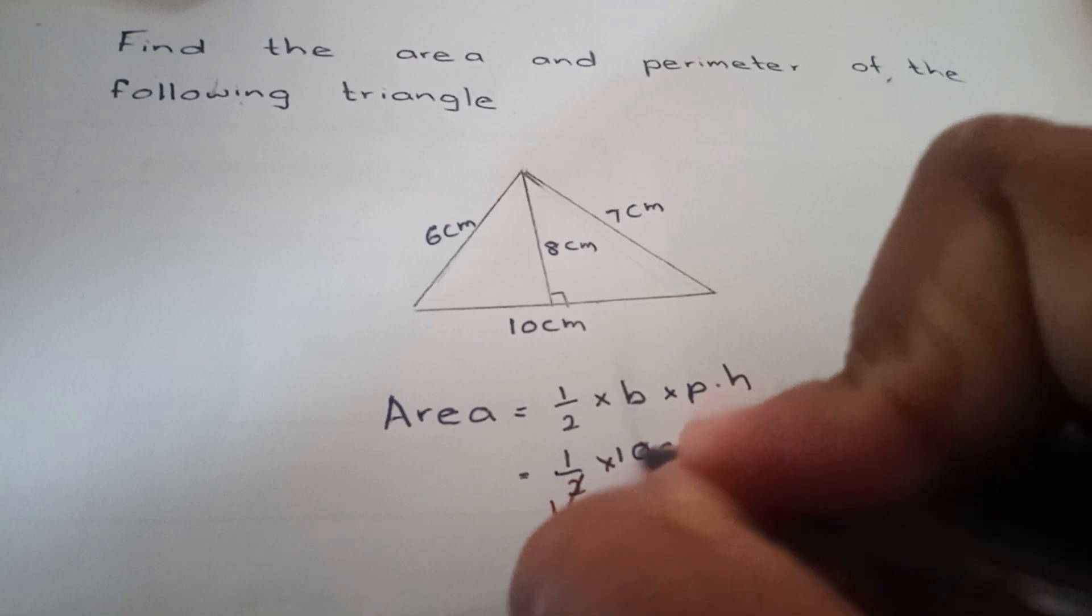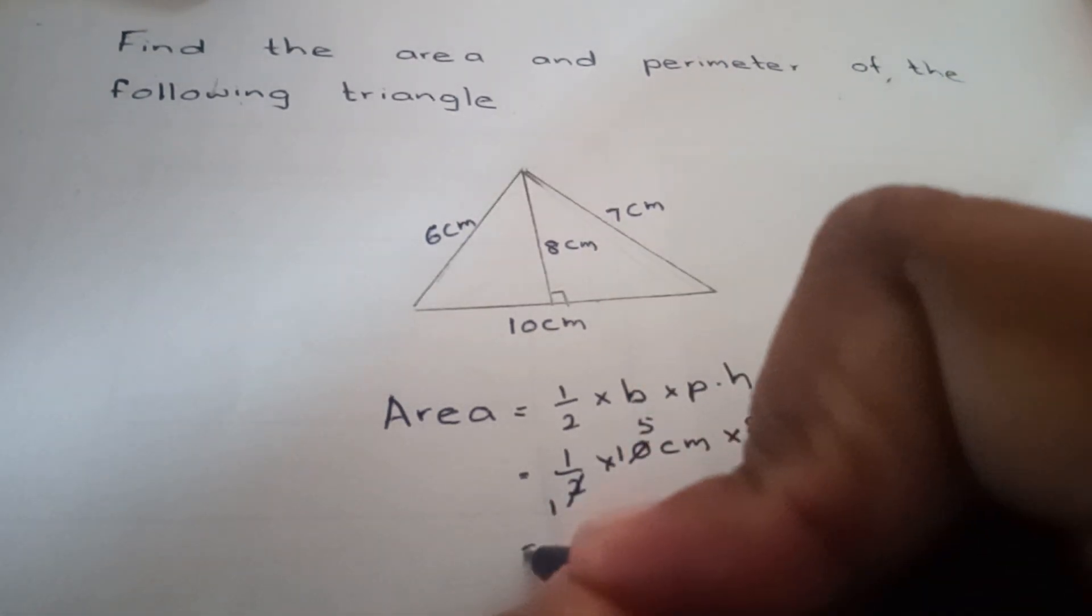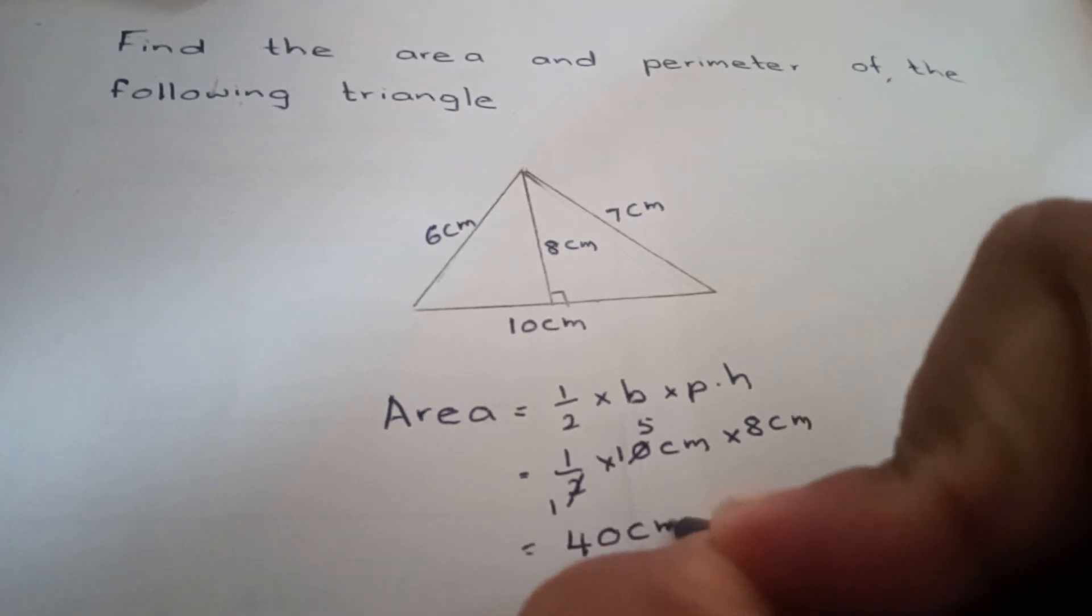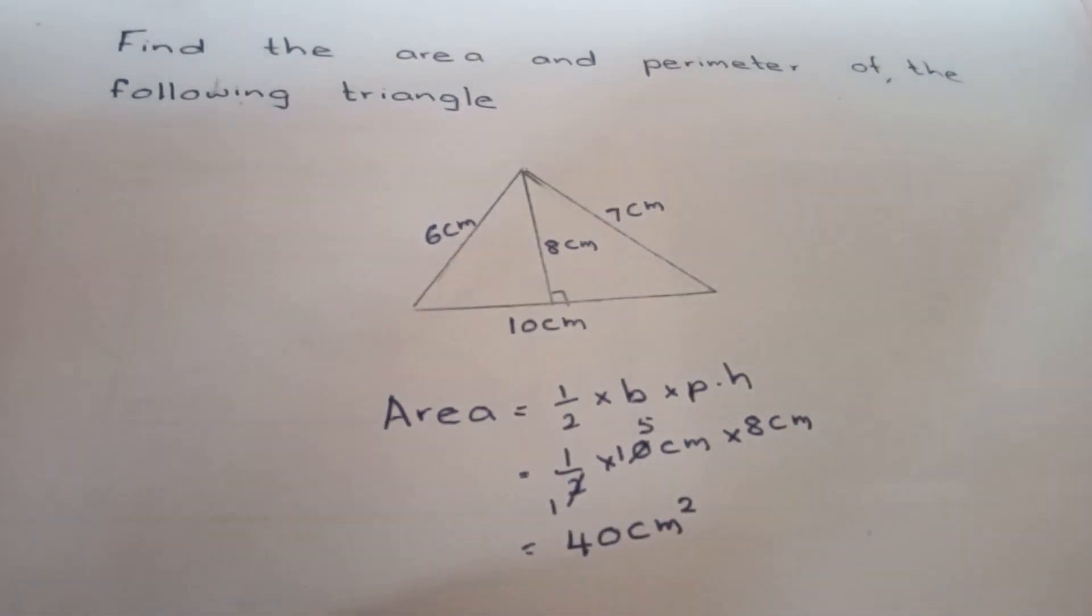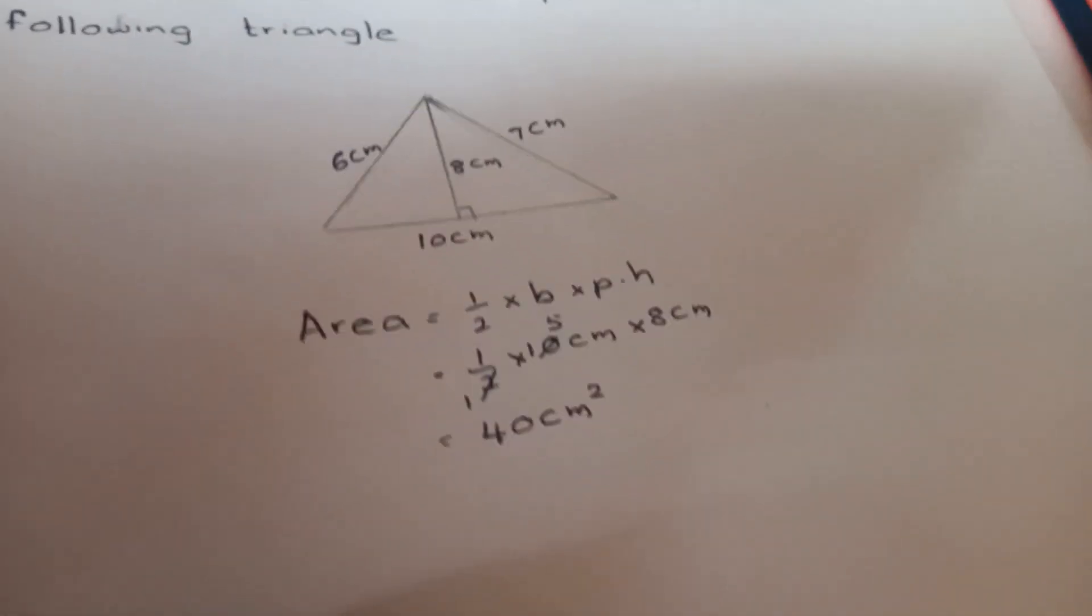Here 1, here 5. 5 times 8 equals 40 centimeters squared. That's the area of the triangle. Next we'll find